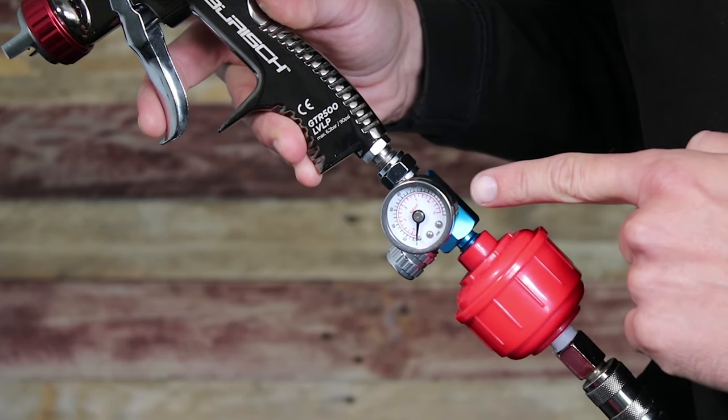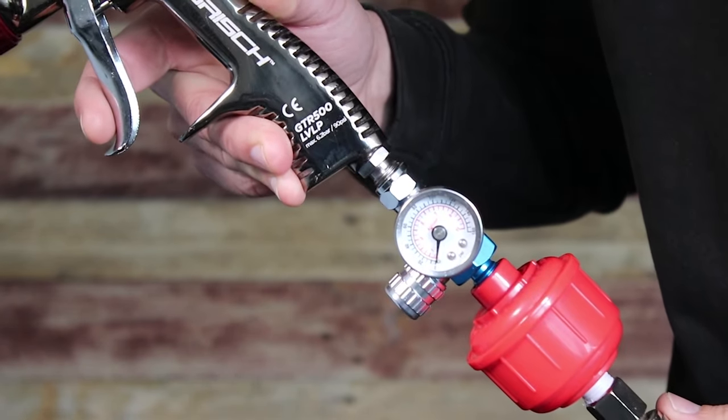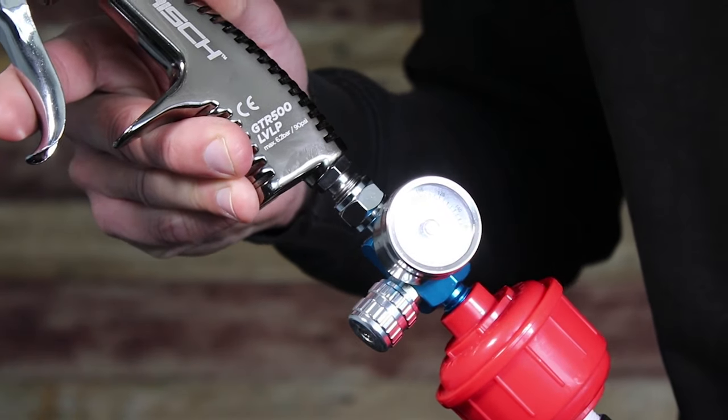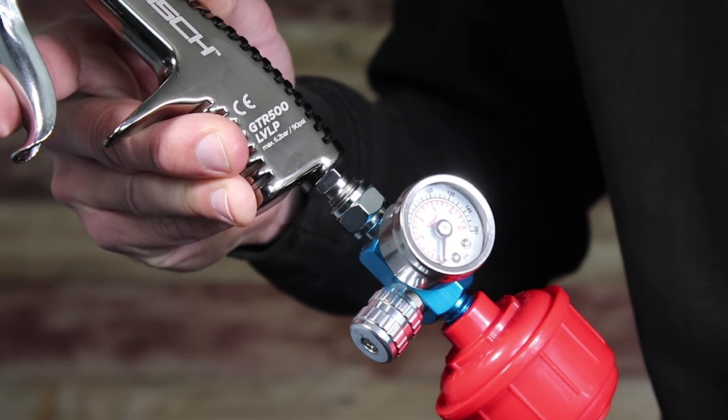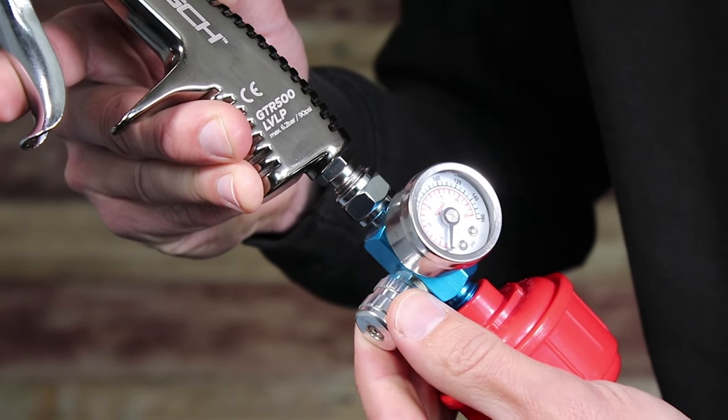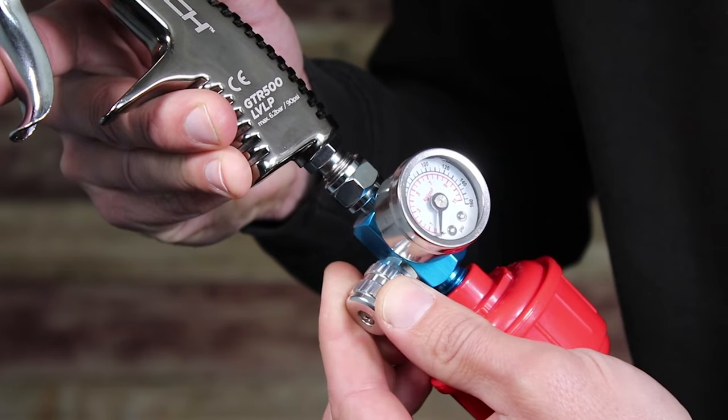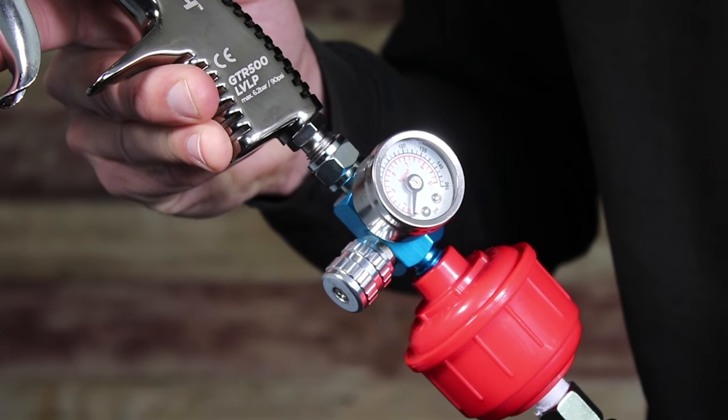In order to accurately set up the correct air pressure to the spray gun, we would highly recommend that you have a mini regulator with gauge fitted to the spray gun. The reason for this is that the pressure on the compressor regulator is not an accurate reflection of the pressure that the spray gun is getting when the trigger is depressed.